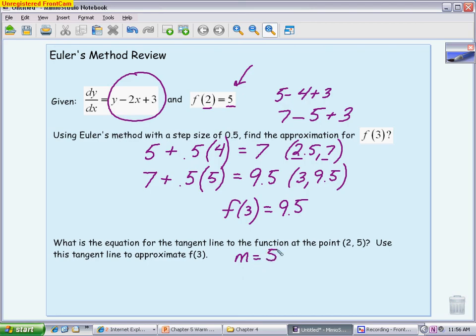So 5 minus 2 times 2 is 4 plus 3. So we get a slope of 4. We have our point 2, 5. So we can write our tangent line in either point slope or slope intercept. I'm just going to go with point slope because it's very easy. So y minus 5 equals the slope 4 times x minus 2.